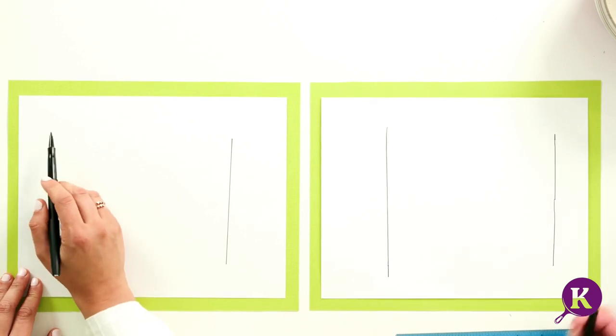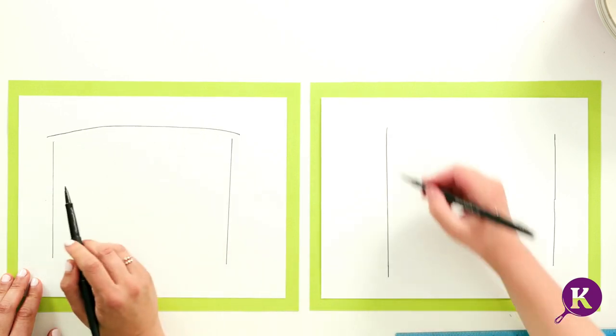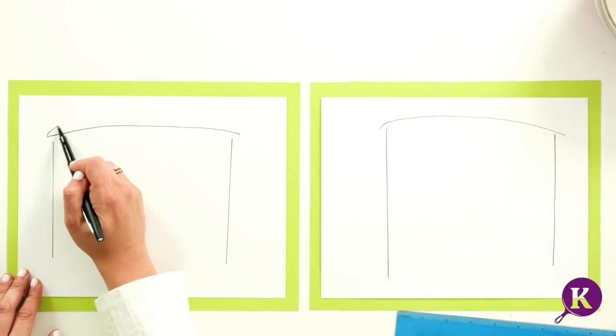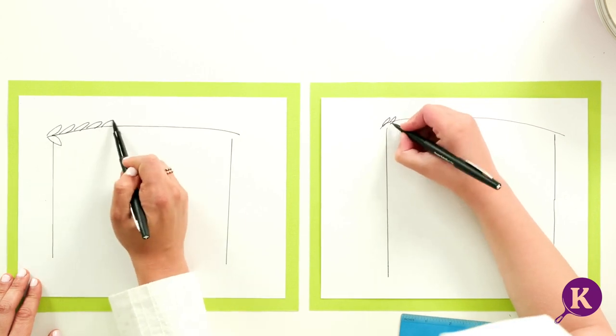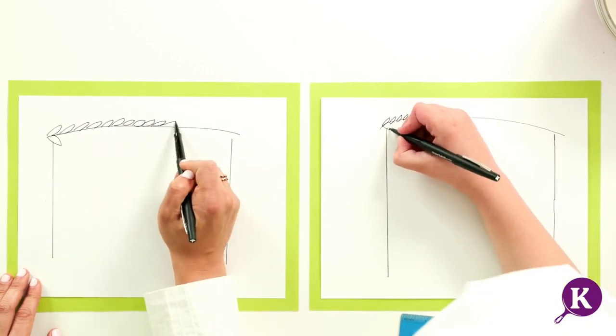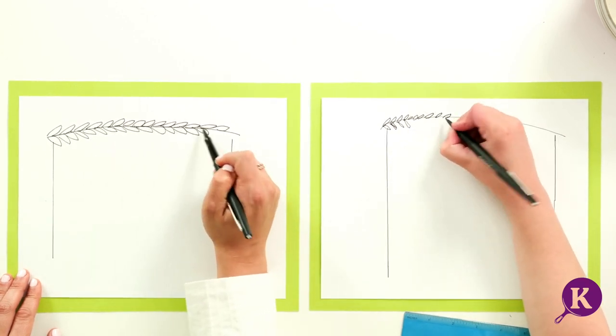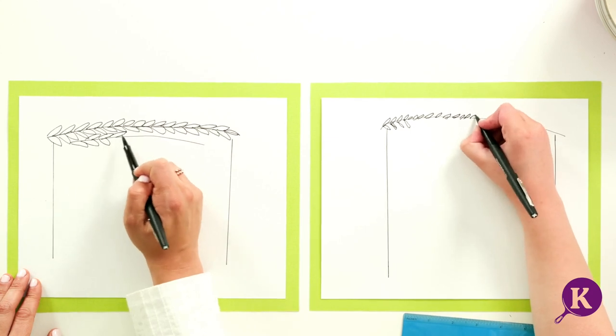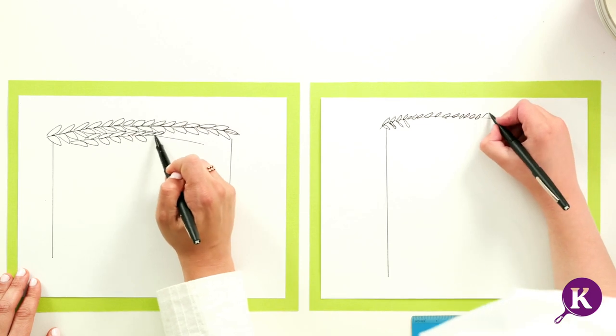And now I'm going to draw the leaves on top of the Sukkah. So I'm going to draw a long branch, and I'm going to fill it in with many, many leaves on both sides. But we want to keep a little bit of space so we can at least see the stars. We're going to fill it in.